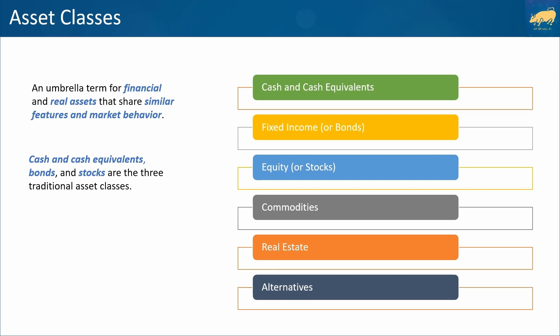Cash and cash equivalents, bonds, and stocks are the three traditional asset classes, and these make up the bulk of most investment portfolios. Let's delve into each one, beginning with the most popular: equity or stocks.